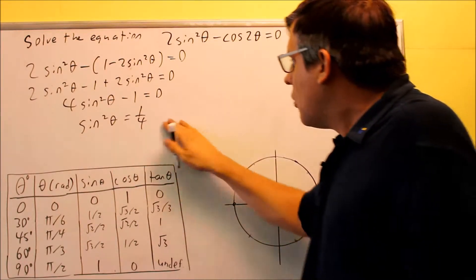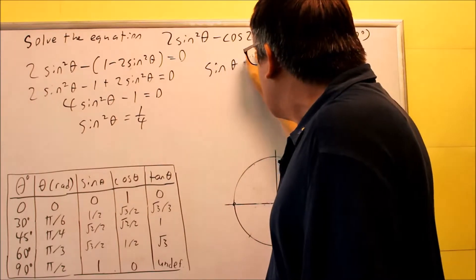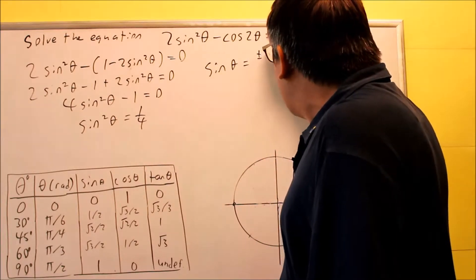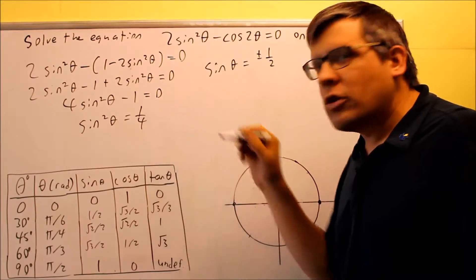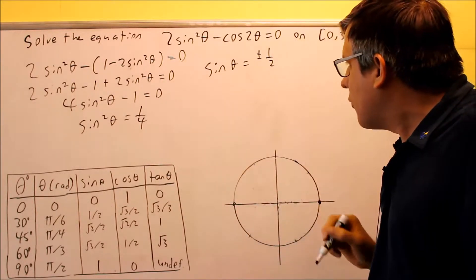Don't forget to take the square root of both sides because we want to get sine theta by itself. Square root of both sides gives sine theta equals plus or minus one-half, taking the square root of the top and bottom separately.